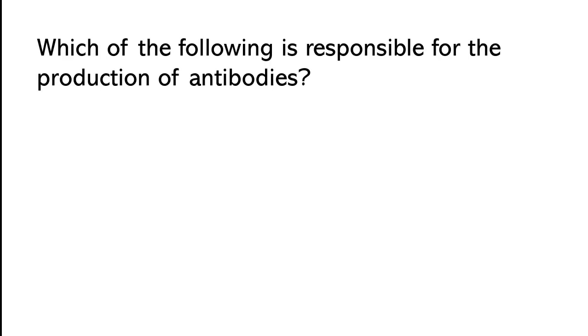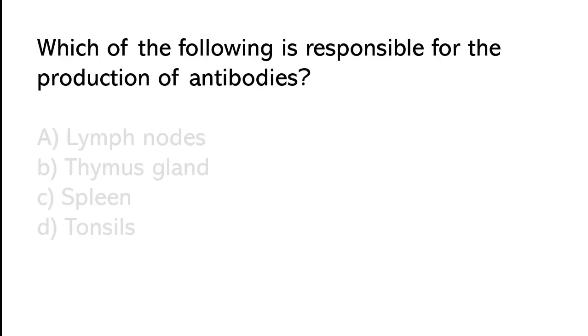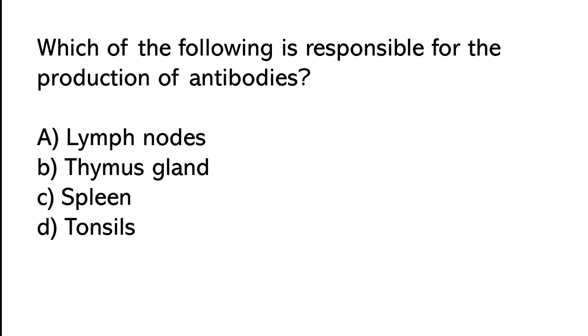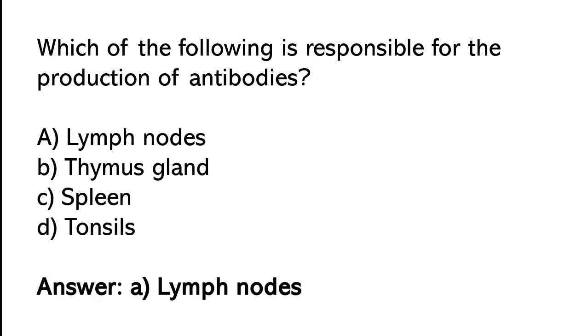Which of the following is responsible for the production of antibodies? Lymph nodes, Thymus glands, Spleen, Tonsils. So the correct answer is option A: lymph nodes.